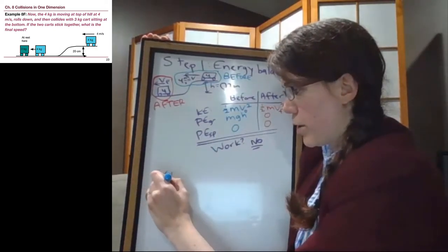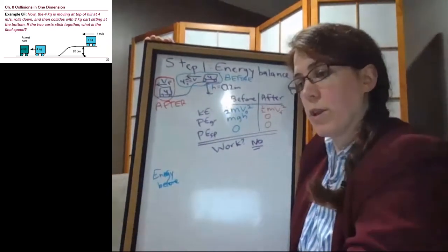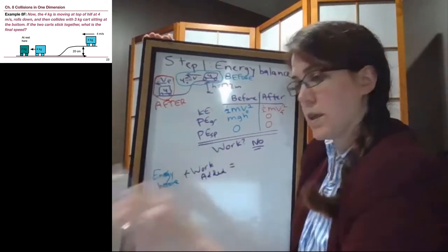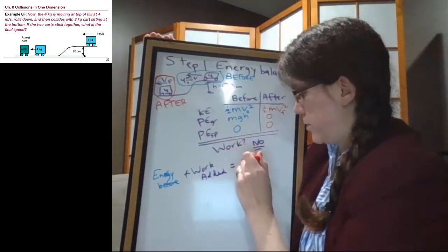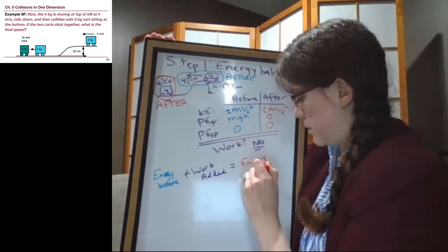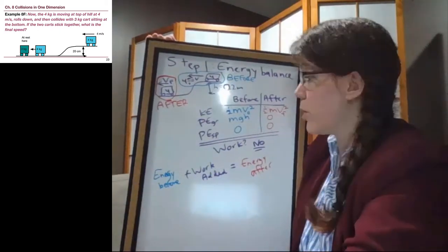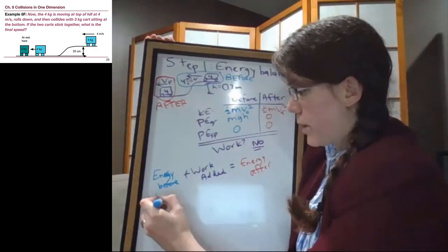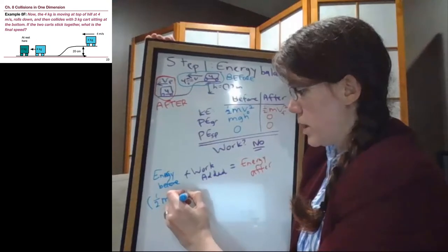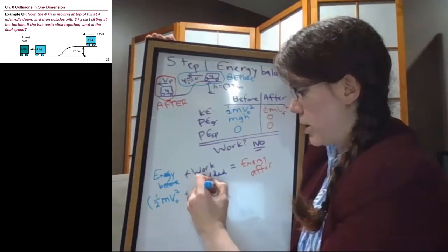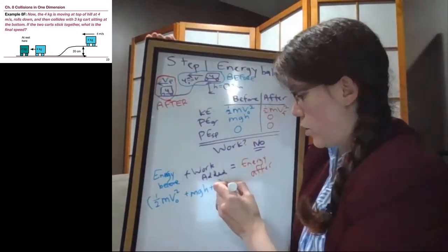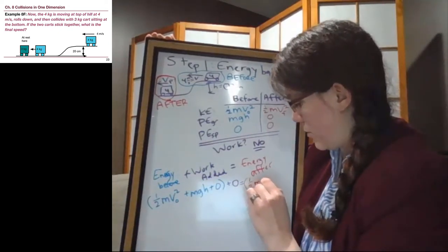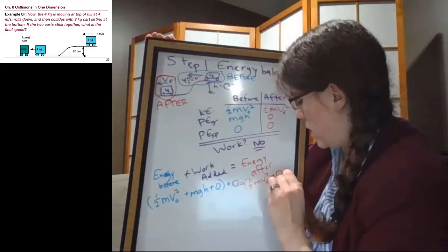energy before plus work added equals energy after. We can follow our nice table of terms. So energy before is 1/2 M V initial squared plus MGH plus 0. The work term, because we said no, we can just write 0. And then the energy after is 1/2 M V final squared plus 0 plus 0.